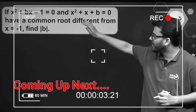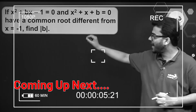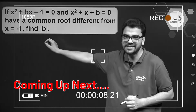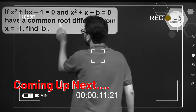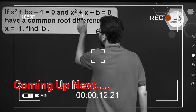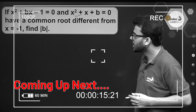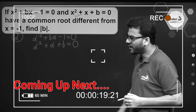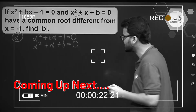We have two quadratic equations that have a common root different from x = -1. Suppose that common root is alpha. Can I find the value of alpha from these two equations?